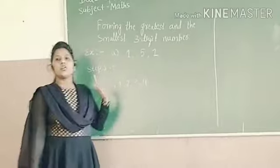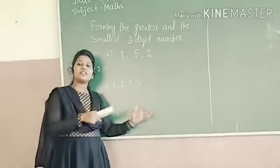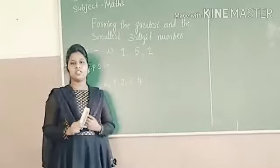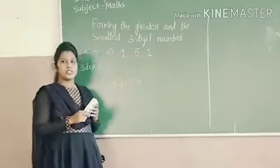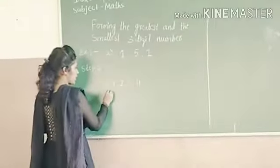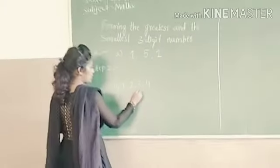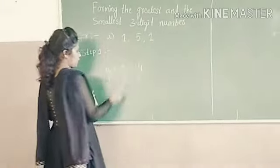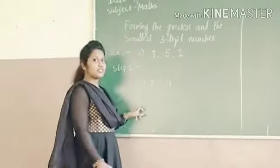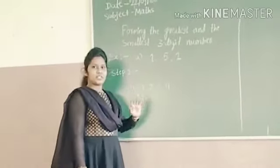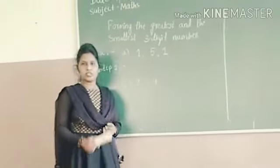Descending order of numbers is from the bigger number to the smaller number. For example, 9, 8, 7, 6, 5. These numbers are in descending order, meaning from bigger number to the smaller number.